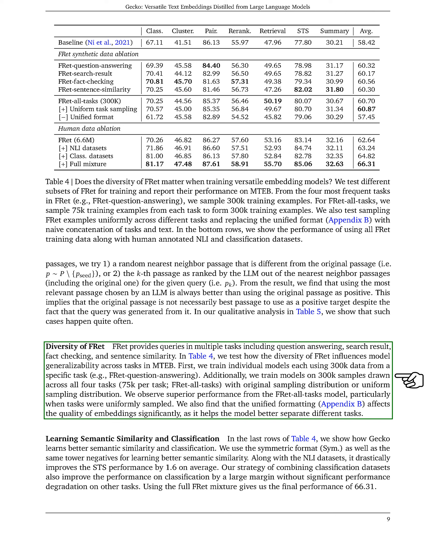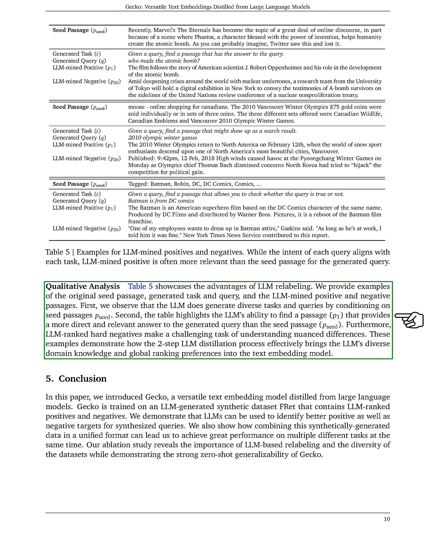In our qualitative analysis, we highlighted the benefits of LLM relabeling. We showcased examples of the original seed passage, the generated task and query, and the LLM-mined positive and negative passages. Our observations revealed that the LLM can generate diverse tasks and queries by considering seed passages. Additionally, the LLM excelled in finding a passage that offered a more direct and relevant answer to the generated query compared to the seed passage. The LLM-ranked hard negatives posed a challenging task in understanding subtle differences. These examples illustrate how the two-step LLM distillation process effectively incorporates the LLM's diverse domain knowledge and global ranking preferences into the text embedding model.